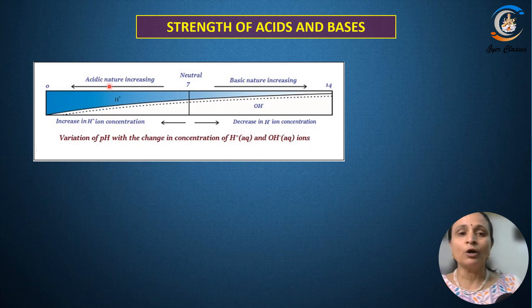Anything which has got H plus ions more is acidic and anything which has got OH minus ions more is called as basic. 7 is neutral. Anything less than 7 is acidic. Anything more than 7 it will be basic.